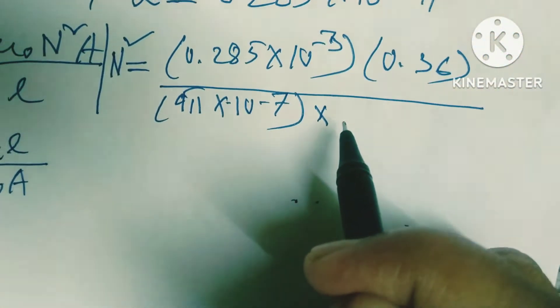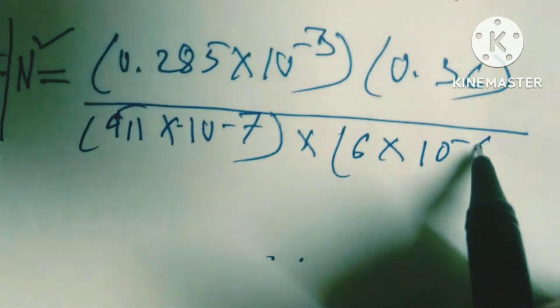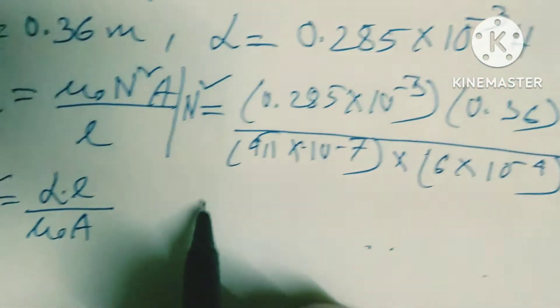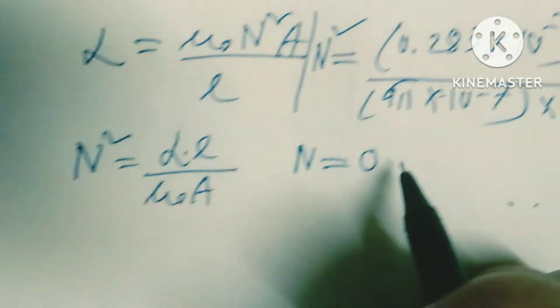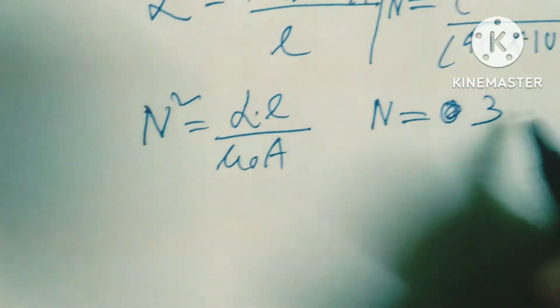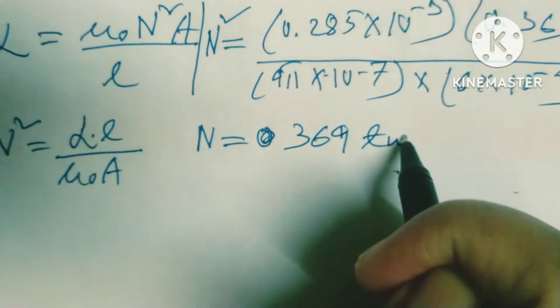After calculation, multiplying by 6×10^-4, we get the number of turns is 369.